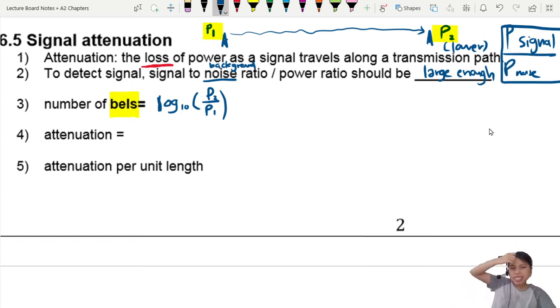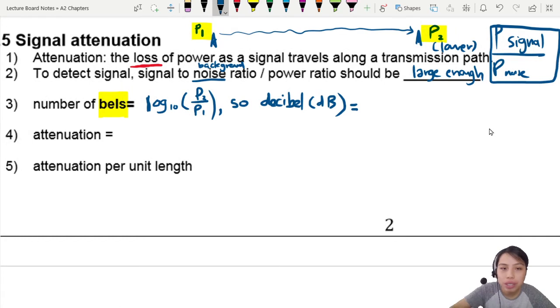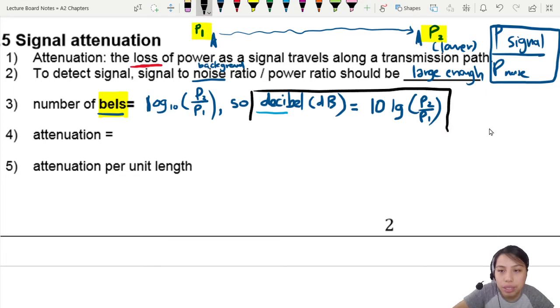But BEL, the numbers are not so nice. So to get nicer numbers, instead of using BELs, we use what we call DECIBEL. The symbol we use is dB, the unit. So a decibel is just a BEL times 10. So this one is 10 log, 10 log P2 over P1. This is an important one which we will use a lot in this chapter, decibel.